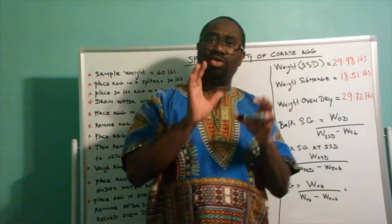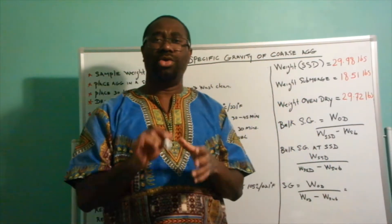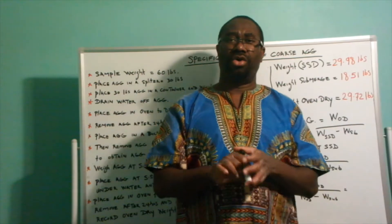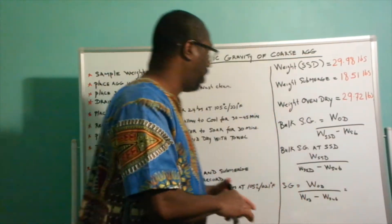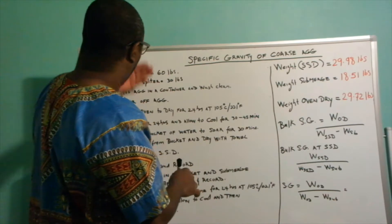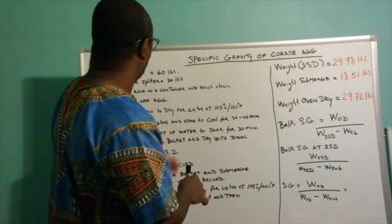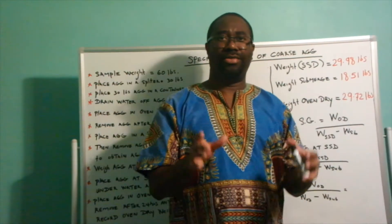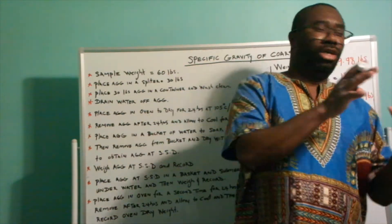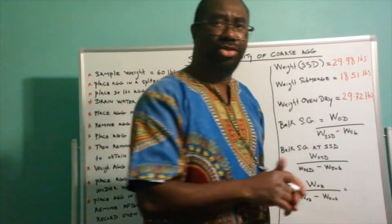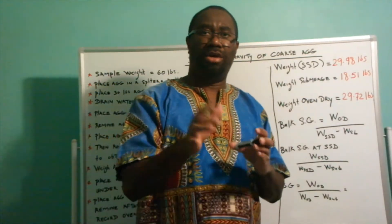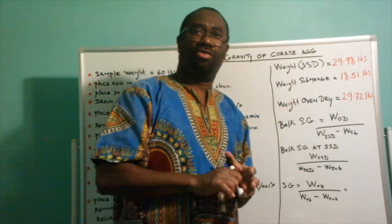There are two ways how you can calculate the specific gravity for your coarse aggregate. You can do it by going through the lab procedure or you can do it through basic calculation. Let's go into what takes place at the lab to determine the specific gravity.